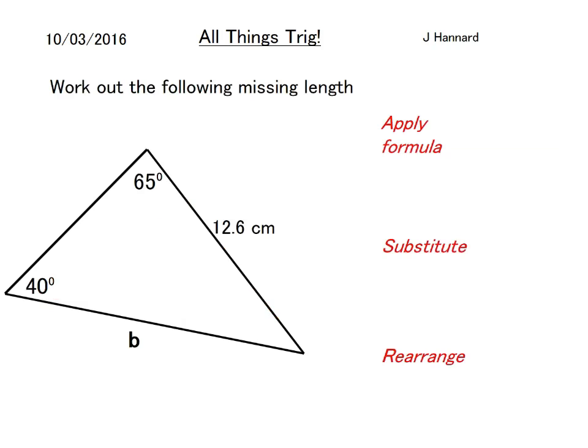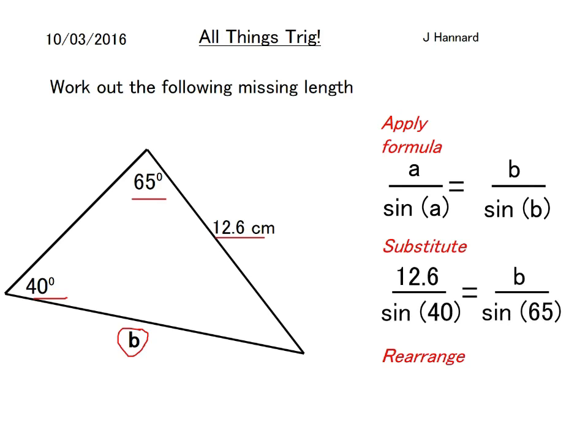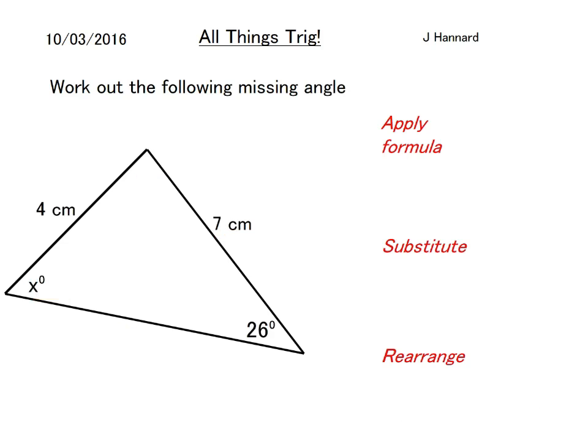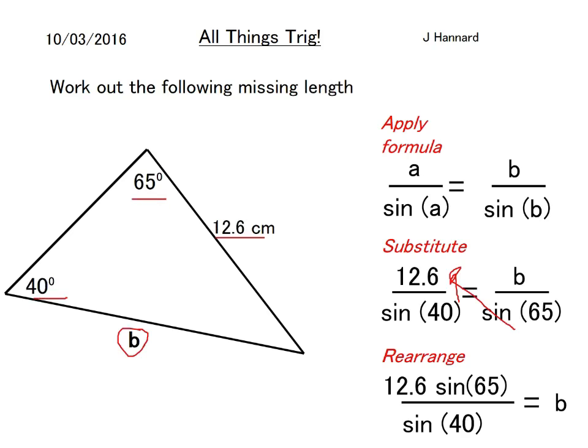Work out the following missing lengths. We've got two angles, 65 degrees and 40 degrees, and we've been given a length of 12.6. We're wanting to find B. The formula is a over sine a equals b over sine b. Substitute your numbers in: 12.6 over sine 40 equals b over sine 65. Rearrange it so sine 65 goes up there and leave b on this side.